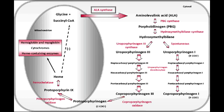What is the name of the enzyme that converts Porphobilinogen to Hydroxymethylbilane? The enzyme that catalyzes this reaction is Porphobilinogen Deaminase. The condition in which there is a defect in Porphobilinogen Deaminase is Acute Intermittent Porphyria, which is the second most common porphyria.